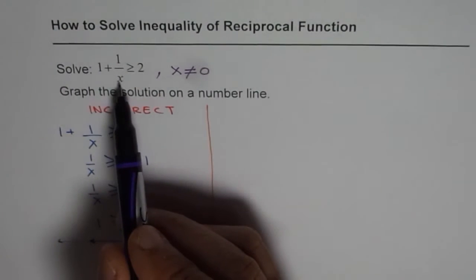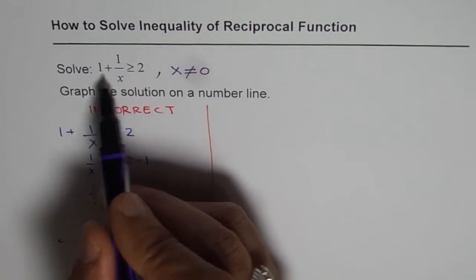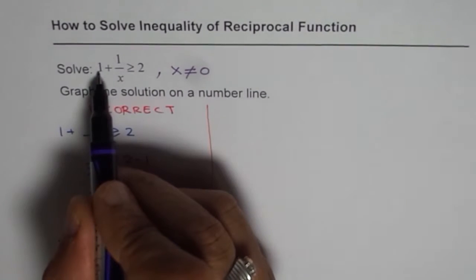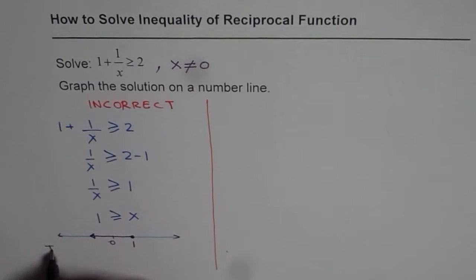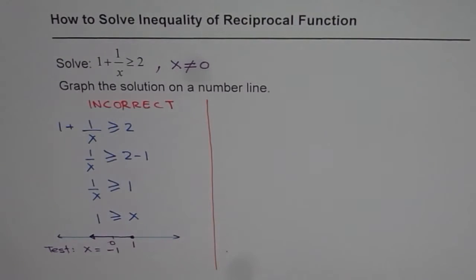Now if I write x as minus some value, let us say minus 1 then it is 1 over minus 1 is minus 1 plus 1 is 0. But if I write minus 5 then it is 1 minus some number and that is not greater than equal to 2. So if you test a point, let us say if you test x equals to minus 1. So if I write minus 1 here what do I get? I get 1 minus 1 is 0. I get 0 is greater than equals to 2 which definitely is wrong. So which is wrong. So that means our solution is incorrect.